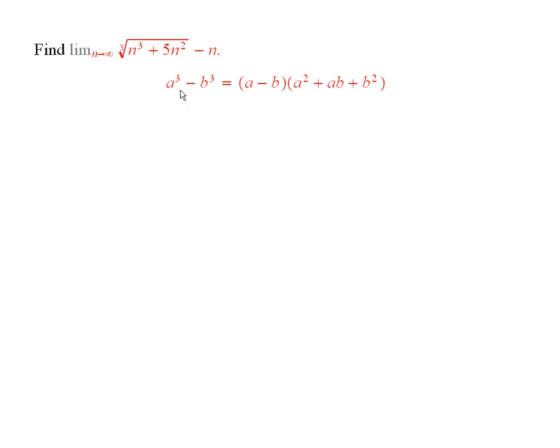Now the interesting algebra that will help is this. a cubed minus b cubed is equal to a minus b, in parentheses, times this expression. And you can verify this is true very easily. Just multiply out the right-hand side.